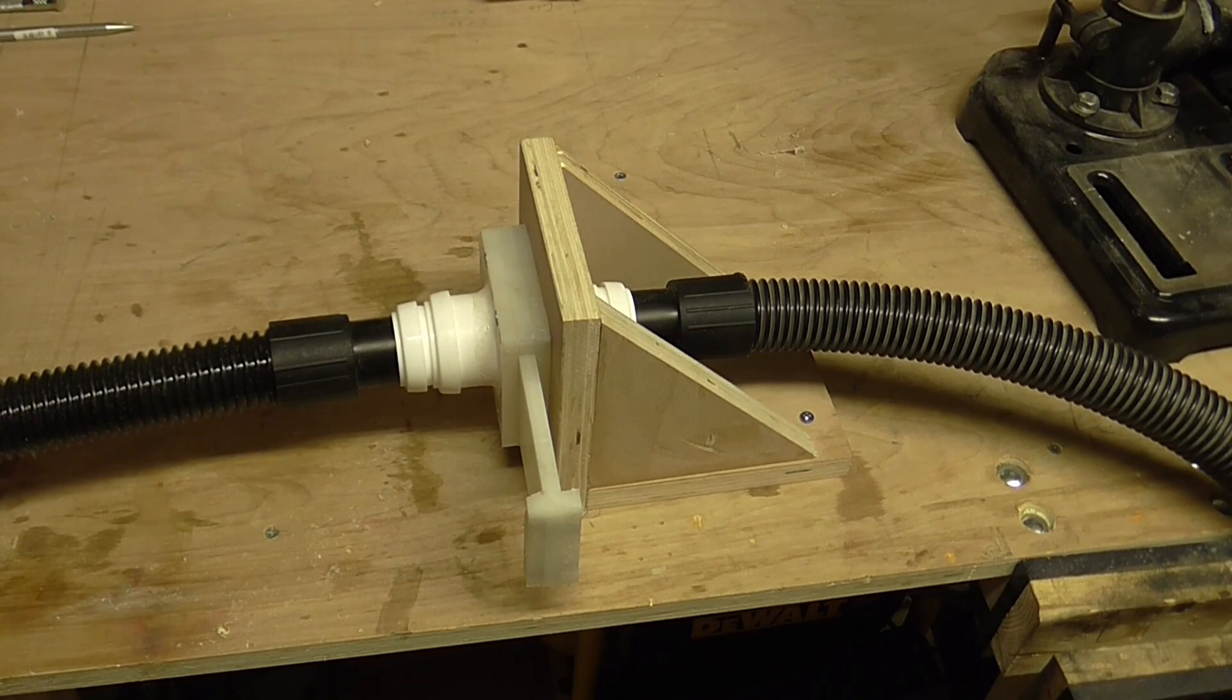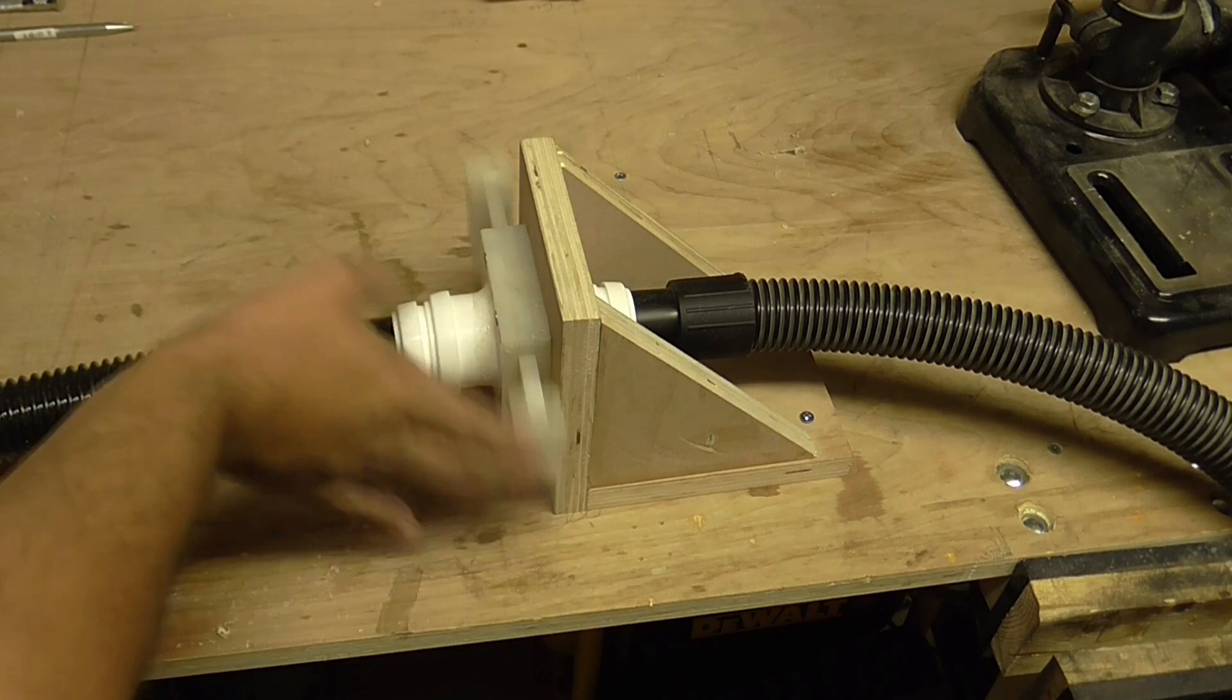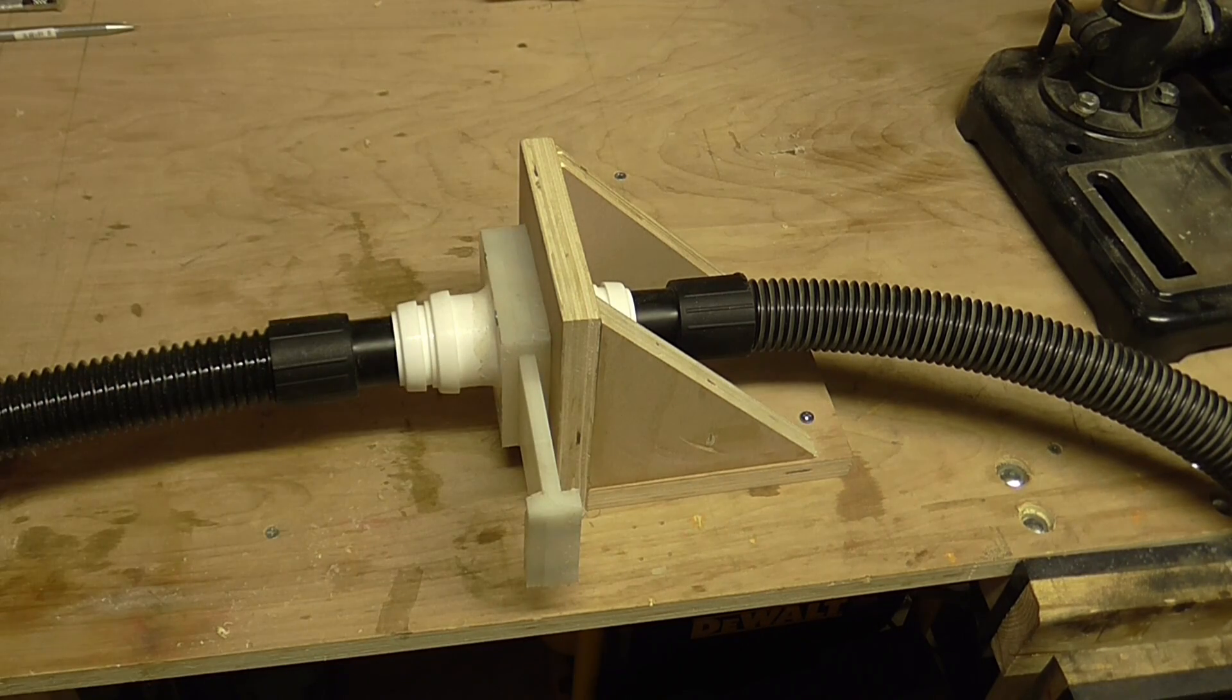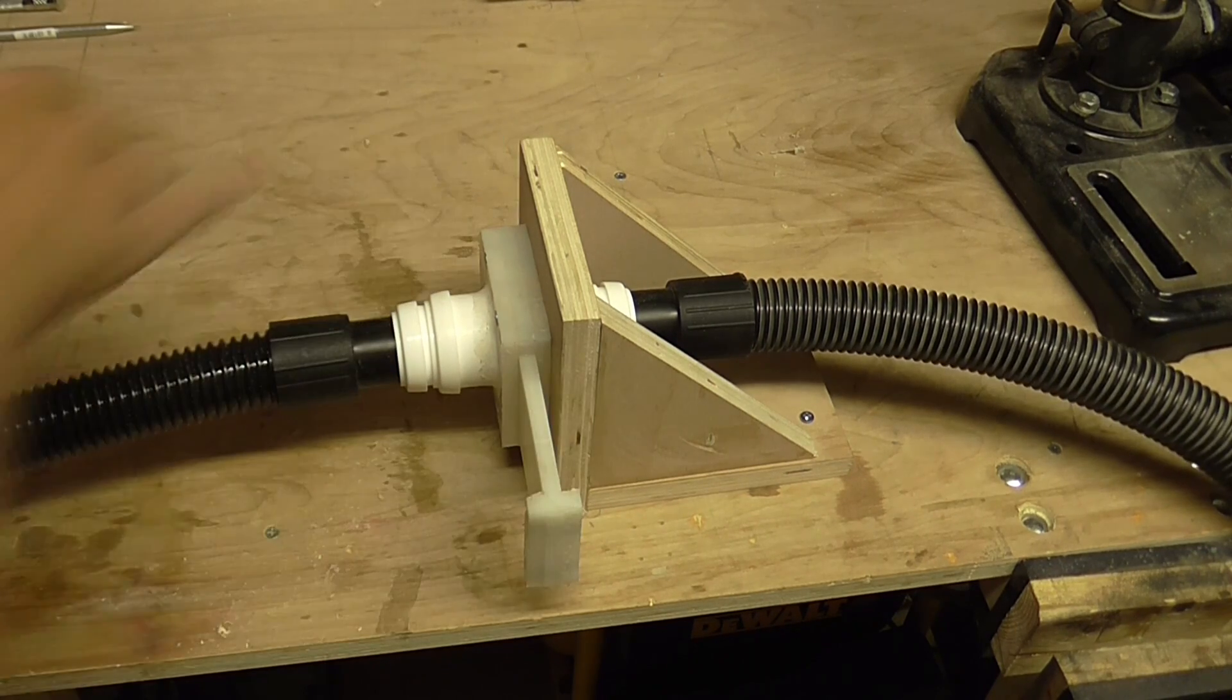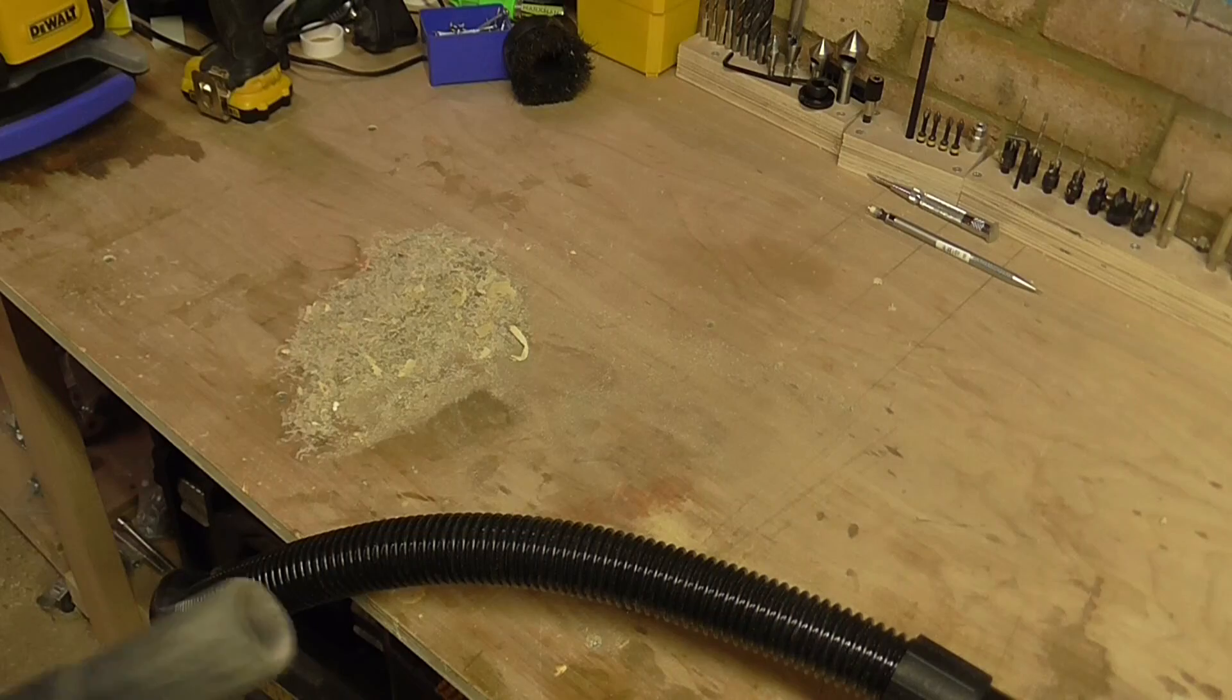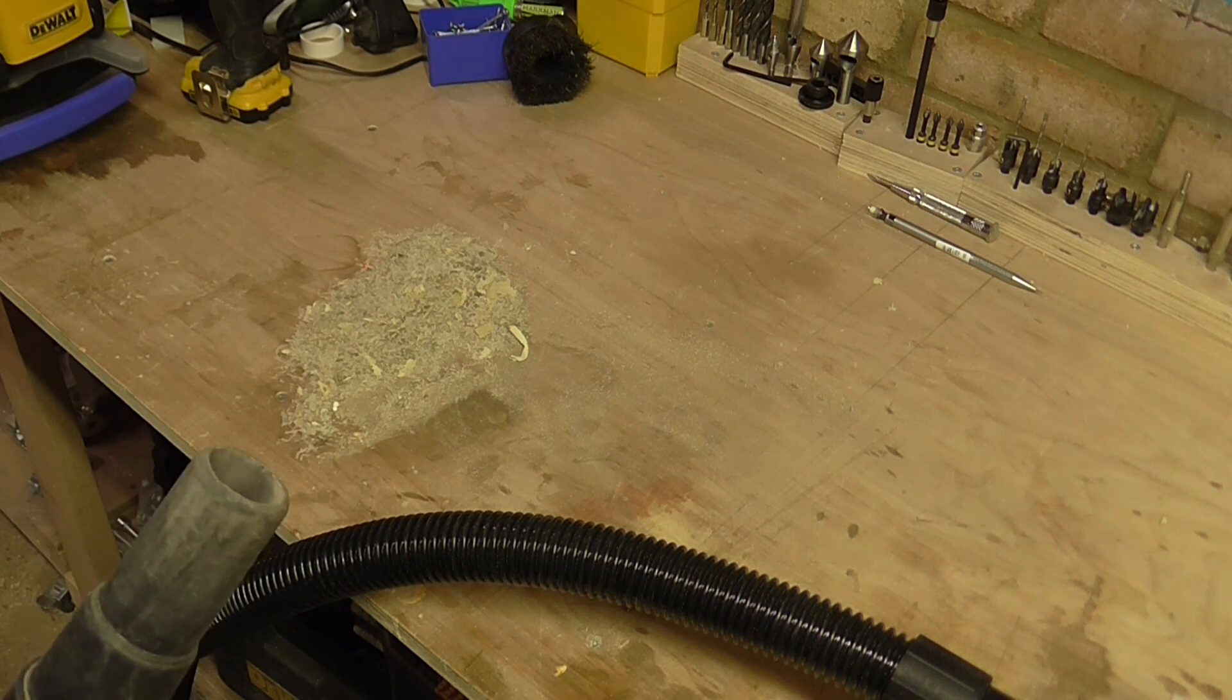So for demonstration purposes I've screwed the bracket to the bench and you can see how the gate works. You can also tell that it's producing a good vacuum when you close it. I'll demonstrate, you'll hear the sound of the vac change. I've put a load of dust on the worktop and I'll show the suction changing now.